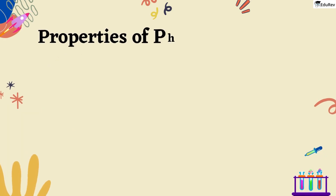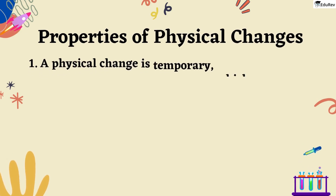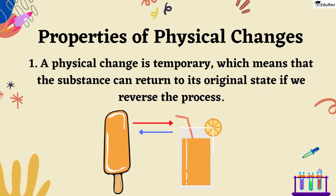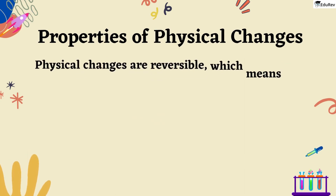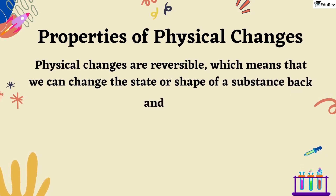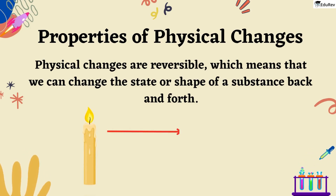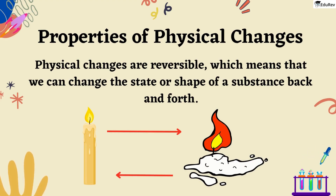Now let's talk about the properties of physical changes. Firstly, a physical change is temporary, which means that the substance can return to its original state if we reverse the process. In other words, physical changes are reversible, which means that we can change the state or shape of a substance back and forth. When you light a candle, the wax melts and turns into a liquid form. When it cools down, the wax changes back to a solid form.